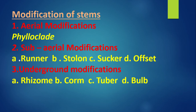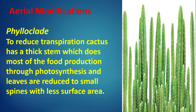Modification of stem — types: Aerial modification includes phylloclade. Subaerial modifications are divided into four types: runner, stolon, sucker, offset. Underground modifications are divided into four types: rhizome, corm, tuber and bulb. Aerial modification — phylloclade: To reduce transpiration, cactus has a thick stem which does most of the food production through photosynthesis, and leaves are reduced to small spines with less surface area. This type of modification is called phylloclade.